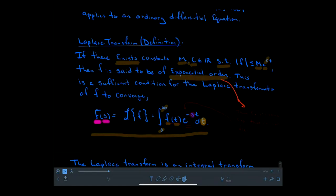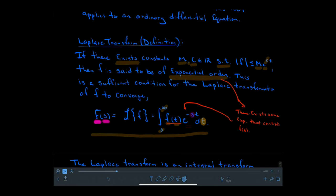What does exponential order mean for us? In the Laplace transform, the data f(t) is being multiplied against e to the negative st. For some s value, we should be able to make this exponential decay so quickly that it controls any growth from f as t goes to infinity. If f can be controlled by some exponential, we can find a decaying exponential that overpowers any growth in f, causing this improper integral to converge.